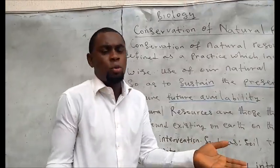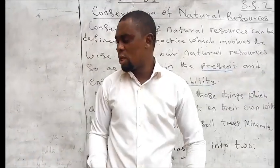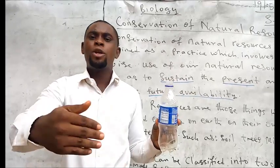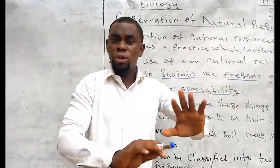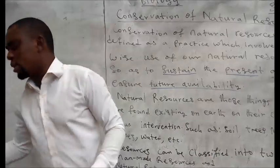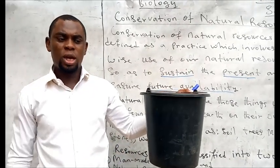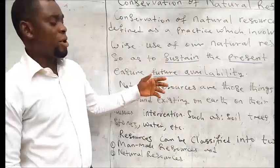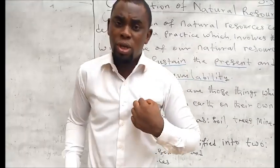Man-made resources are those resources that we humans intentionally created from naturally existing substances. For example, this can is made from polyethylene material, which is gotten from hydrocarbon — a substance found naturally on its own. This bucket is used for taking baths and domestic chores at home, but it is made from polyethylene material, so all of these are man-made resources. Even this marker here is a man-made resource made from some of these natural substances.